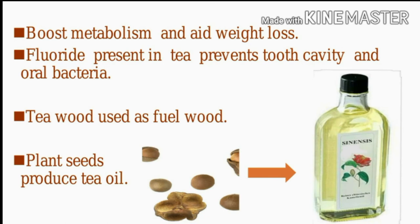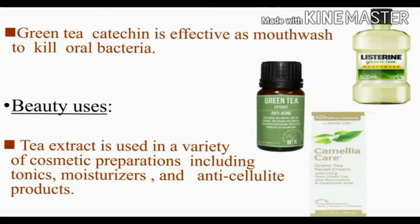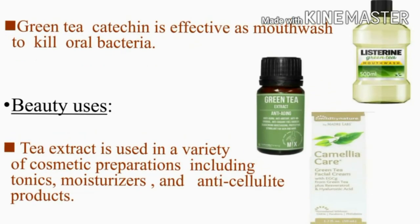Tea plants produce tea oil, also called lamp fuel oil. This tea oil is edible and can be used as a castor oil or olive oil substitute.